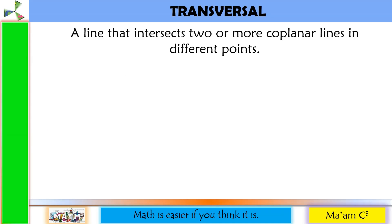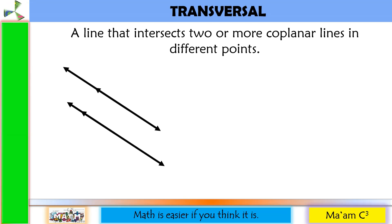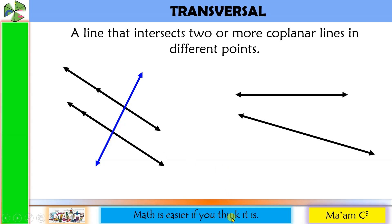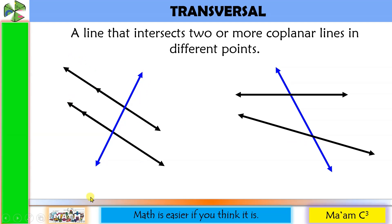Let us define transversal. It is a line that intersects two or more coplanar lines in different points. Let's have a pair of lines — this is a transversal. It intersects the lines at two different points. Lines cut by a transversal may be parallel or not parallel lines.